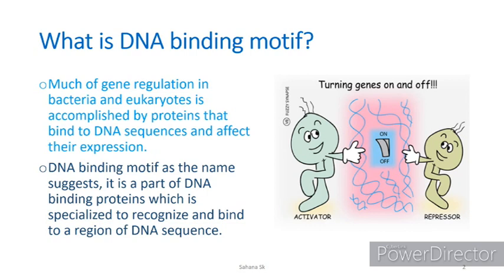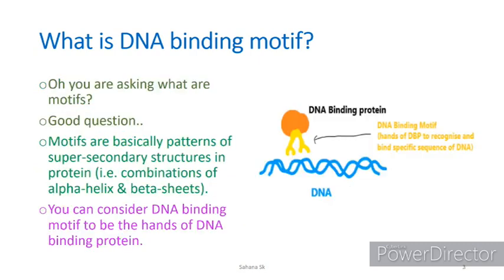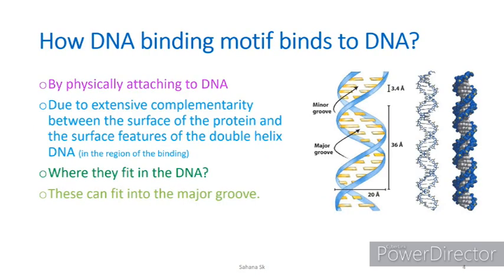A DNA binding motif, as the name suggests, is a part of a DNA binding protein which is specialized to recognize and bind to a region of DNA sequence. Motifs are patterns of super-secondary structures in proteins — basically alpha helices and beta sheets. You can consider a DNA binding motif to be the hands of a DNA binding protein, which will recognize and hold on to the DNA.